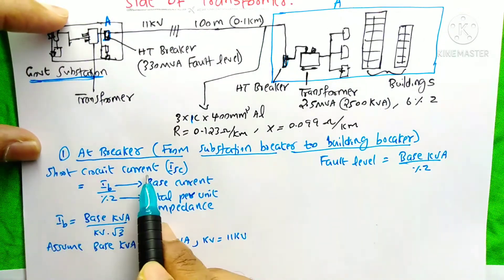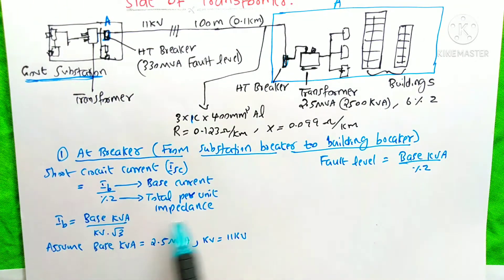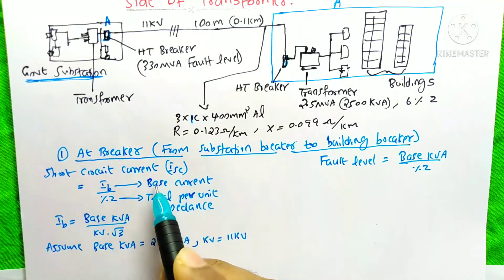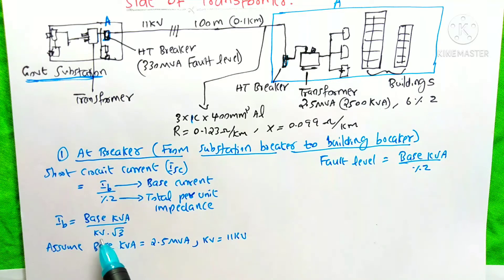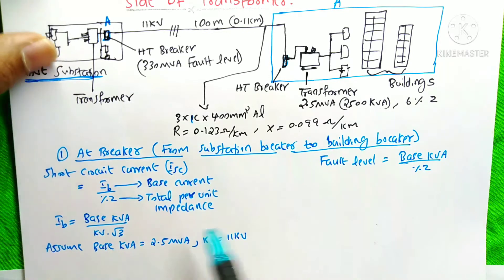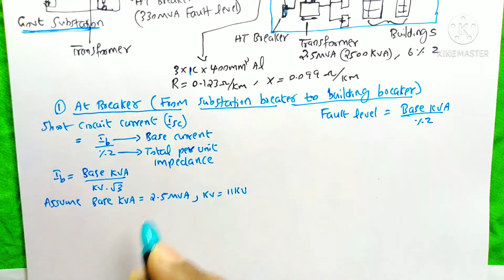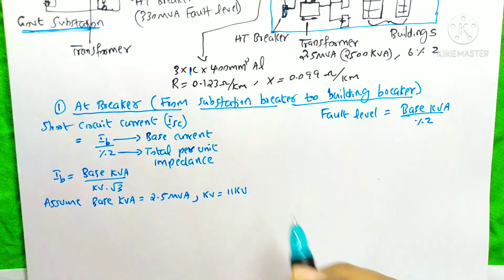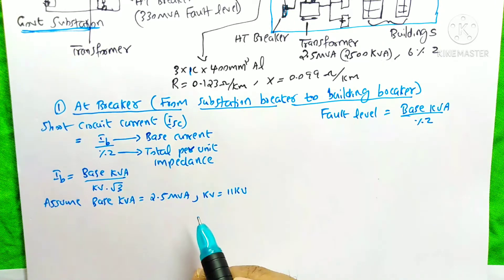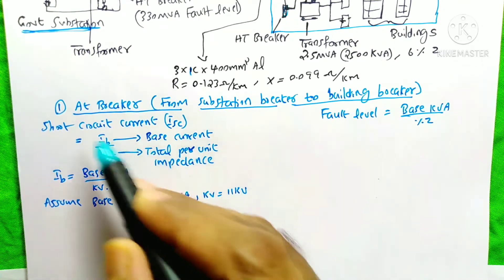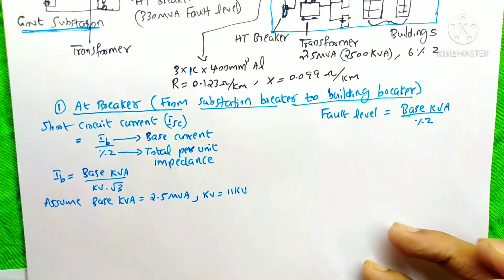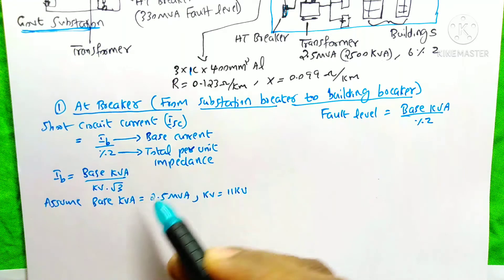For this calculation, the short circuit current ISC equals IB divided by total per unit impedance, where IB is the base current. The base current equation is: base KVA divided by (KV × √3) — it is just the power equation (I = P / (V√3)). The fault level equation is base KVA divided by per unit impedance. In our calculation, we assume base KVA equals 2.5 MVA. You could take it as 5, 10, or 100 MVA — whatever value you choose, the final short circuit current and fault level answer will be the same.